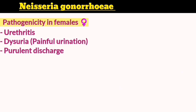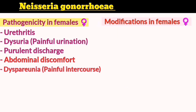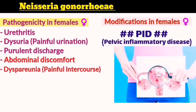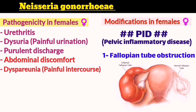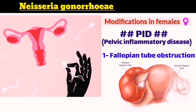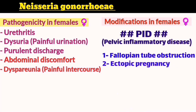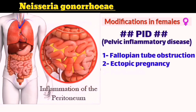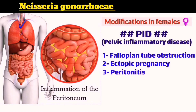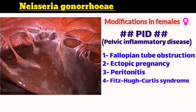Women may also experience abdominal discomfort and dyspareunia. Complications include pelvic inflammatory disease, an infection of the genitals that spreads to the uterus, fallopian tubes, or ovaries. Fallopian tube obstruction causes infertility due to destruction of cells preventing fertilization. Ectopic pregnancy is another dangerous complication resulting from fallopian tube inflammation. Inflammation can also occur in the peritoneum, causing peritonitis, which can lead to Fitz-Hugh-Curtis syndrome — swelling of the tissue around the liver caused by pelvic inflammatory disease.